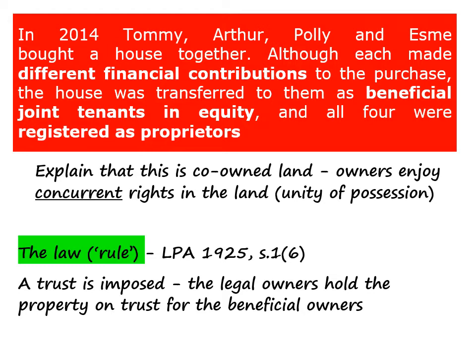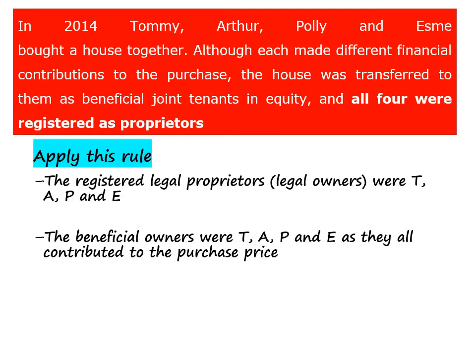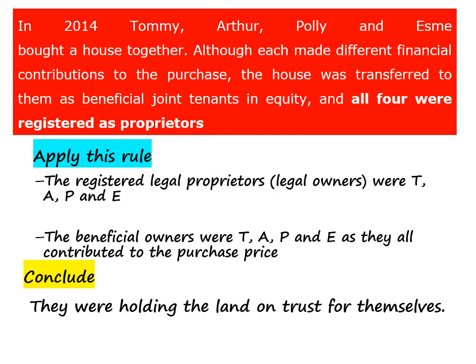Co-ownership questions are very popular in exams, so you need to ensure that your answer is as detailed and accurate as possible to distinguish it from other students' answers. I would identify Tommy, Arthur, Polly and Esme as the original legal owners because the facts state they were named as the registered proprietors, and because they all contributed towards the purchase price I would also conclude that they were the beneficial owners too. So my conclusion is that the original purchasers were holding the property on trust for themselves.